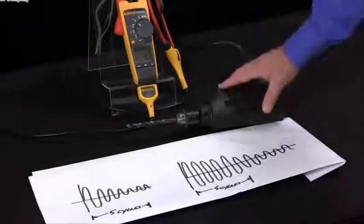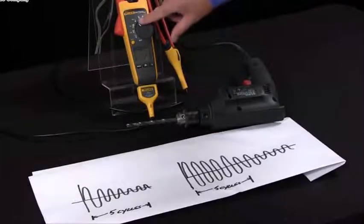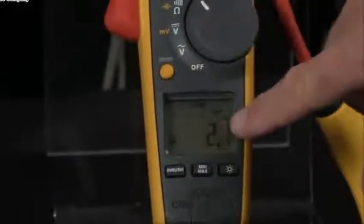How do I measure inrush with my Fluke clamp meters? To measure inrush, we turn the clamp meter to the amp function and here we have the running current.